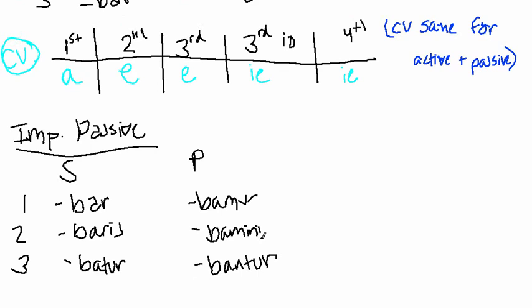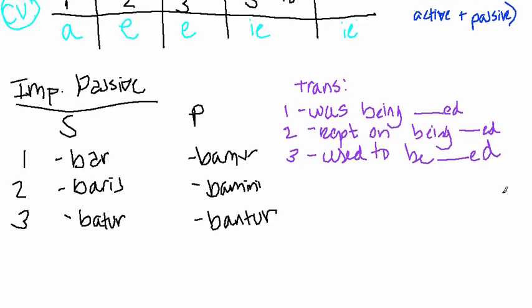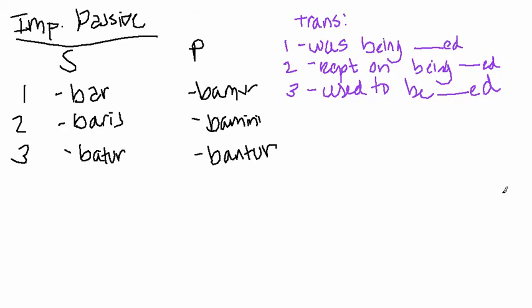Okay. So the passive will be translated. Let me write this down in a different color so it stands out. Imperfect passive will be translated in one of three ways. One way is was being blanked. Second way is kept on being blanked. And finally, you have the third, used to be blanked. And I'll give you an example of a conjugated verb, just so you get the idea.